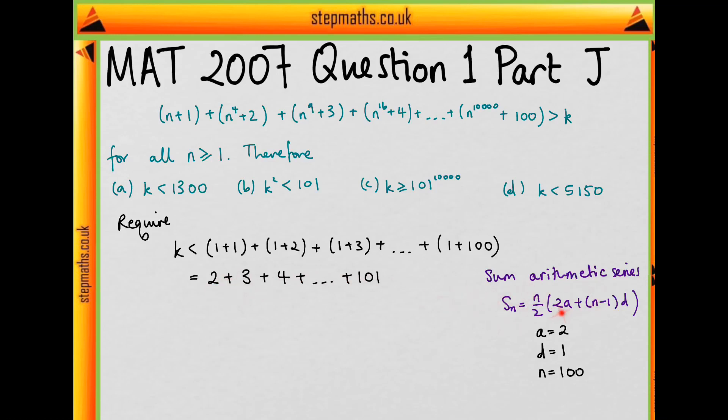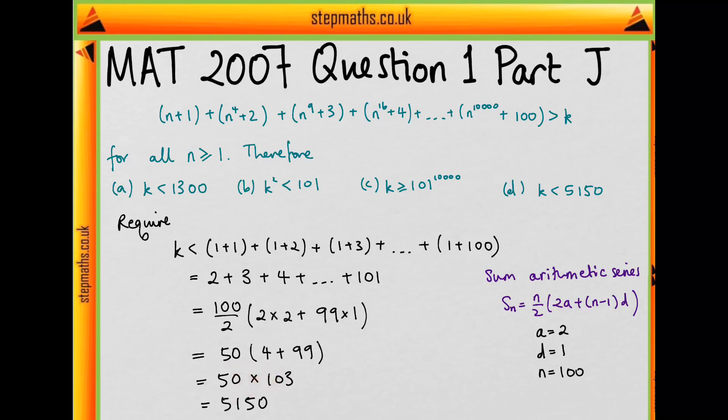So if we use this formula with this a, d, and n, then we see that this sum is going to be 100 over 2 times 2 times 2 plus 99, which is n minus 1 times 1. And that's equal to 50 times 103, which is 5150, which we see is answer d.